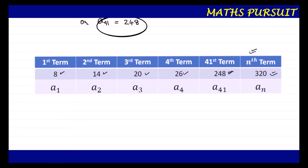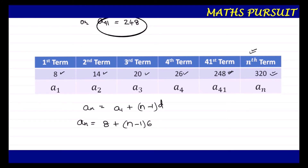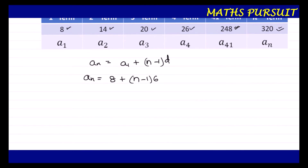We are going to utilize the formula again: a_n = a_1 + (n − 1) × d. Here the value of n we do not know. We know d = 6 — since a_3 − a_2 = 20 − 14 = 6, or 14 − 8 = 6. So I can write: a_n = 8 + (n − 1) × 6. And instead of a_n, we know the value is 320.